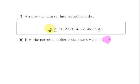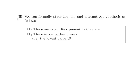Our potential outlier is 19. What we are going to do is formally state the null and alternative hypothesis for the Dixon Q-Test. The null is: there are no outliers present in the data. The alternative hypothesis is that there is one outlier present in the data, which is to say the lowest value, 19.